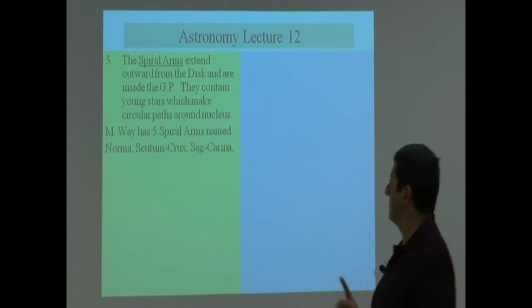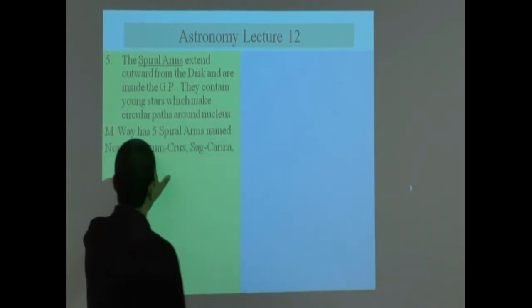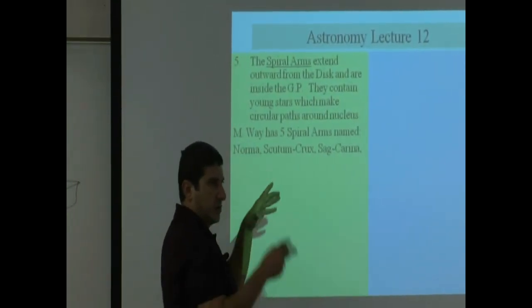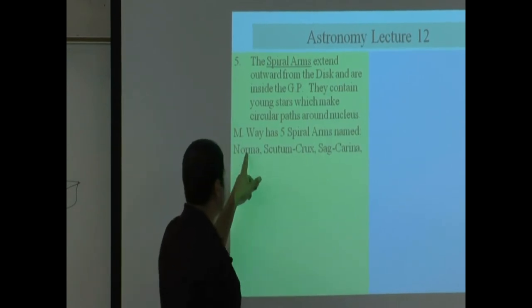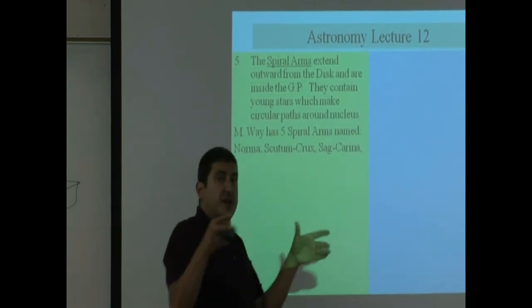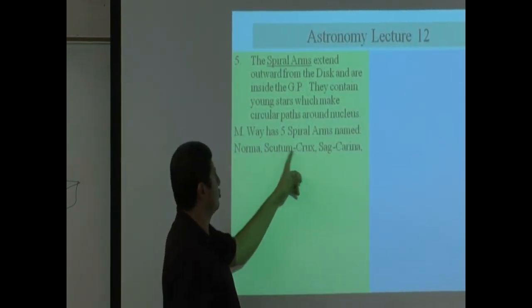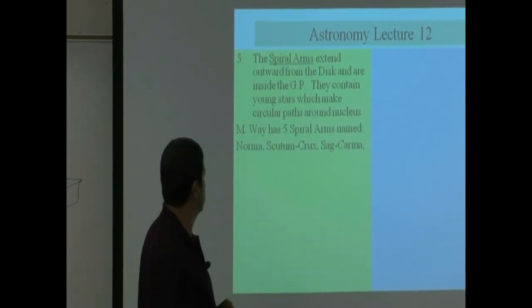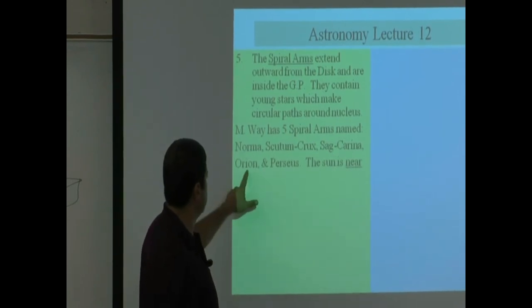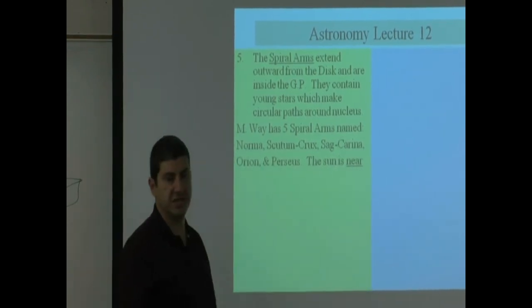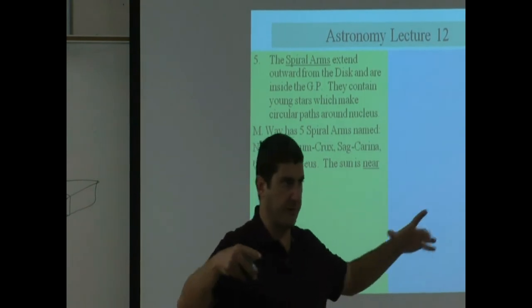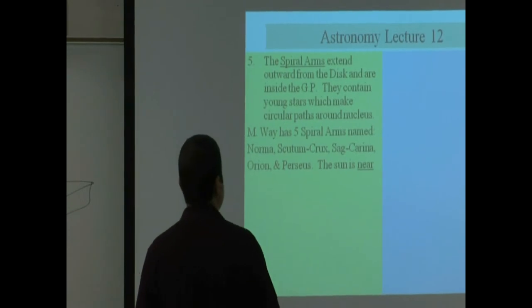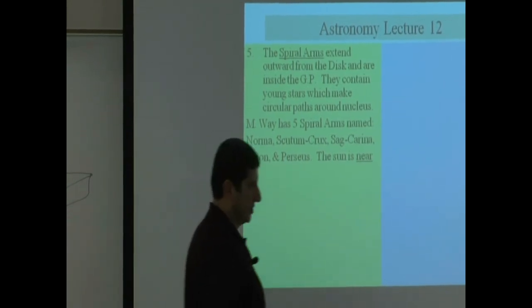And then the order of how I name these, from the innermost one: the spiral arm closest to the center is called Norma. Then the second one, farther away from the center, Scutum-Crux. The third one is Sagittarius Carina, fourth one Orion, and then the fifth one Perseus. So those are outward from the center.